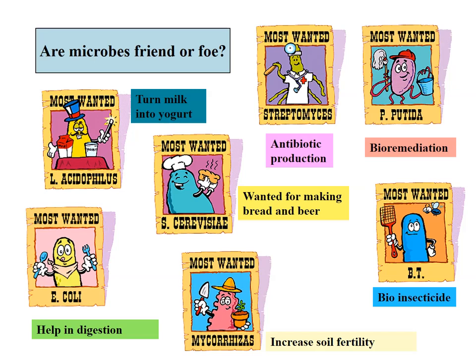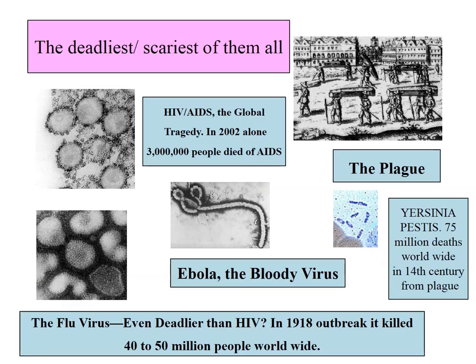Many microbes are friendly and useful. The good ones we utilize for beneficial products include Lactobacillus acidophilus, which turns milk into yogurt; Saccharomyces cerevisiae, which makes bread rise; antibiotic-producing Streptomycetes; and Pseudomonas putida, which helps clean polluted soil and water. Others work as insecticides, mycorrhizae help plants increase fertility, and E. coli helps humans and animals in digestion.